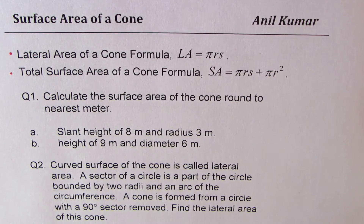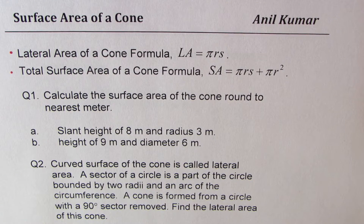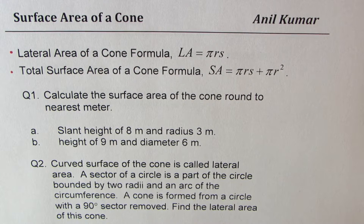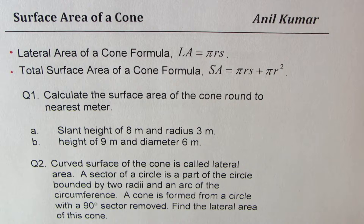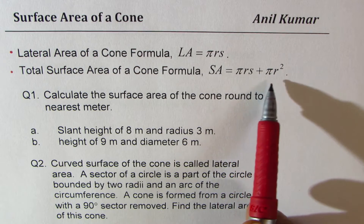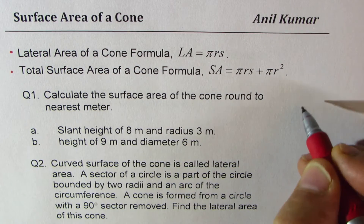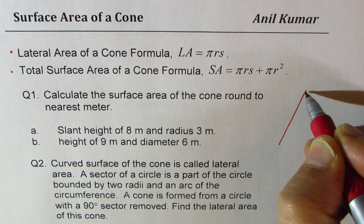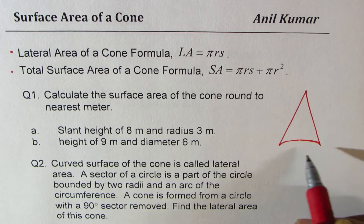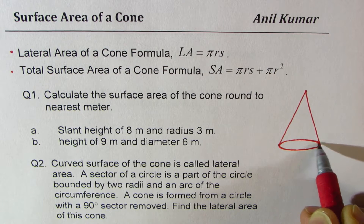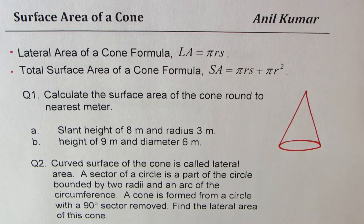I'm Anil Kumar sharing with you questions based on surface area of a cone. We are going to use these formulas: lateral area of a cone is πrs, total surface area of a cone is πrs plus πr². Let me explain these two formulas.